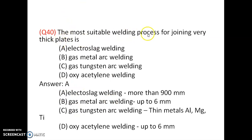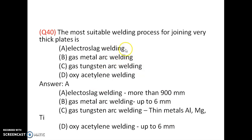The most suitable welding process for joining very thick plates is — electroslag welding, gas metal arc welding, gas tungsten arc welding, oxyacetylene welding. Electroslag welding can be used to weld plates from 300 to 900 mm thickness. Gas metal arc welding can weld up to only 6 mm thick plates. Oxyacetylene welding can also weld up to 6 mm. Option A is correct — electroslag welding.